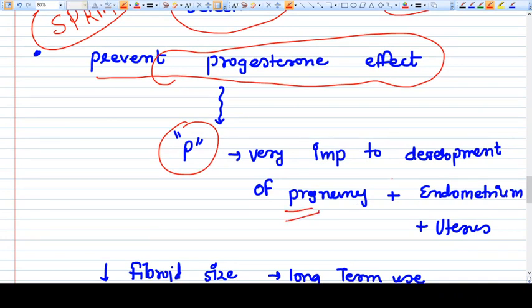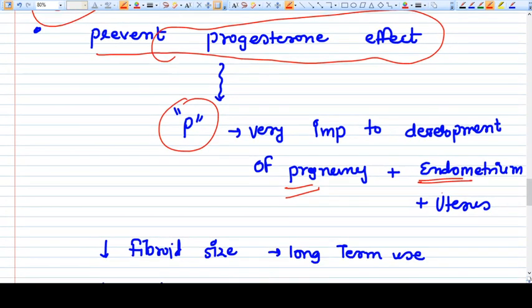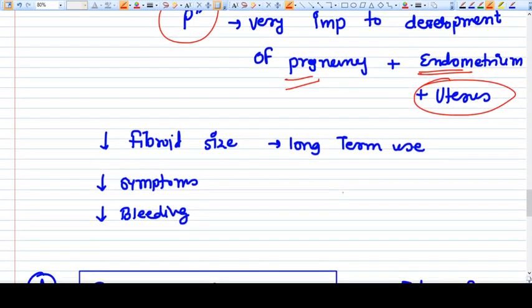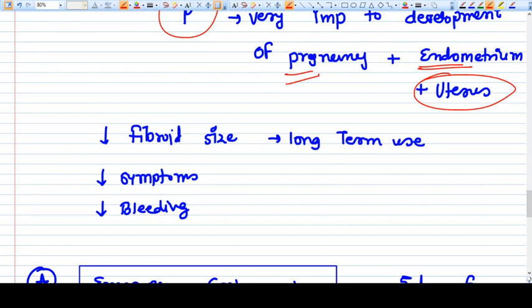Progesterone supports development and continuation of pregnancy, placental support, endometrial support, and also acts as a growth factor for the uterus. Once we antagonize progesterone, it will affect all these things. If pregnancy is there, there are chances pregnancy can be discontinued.